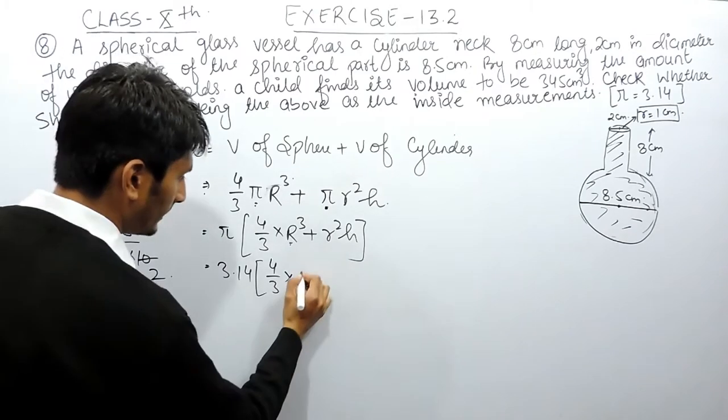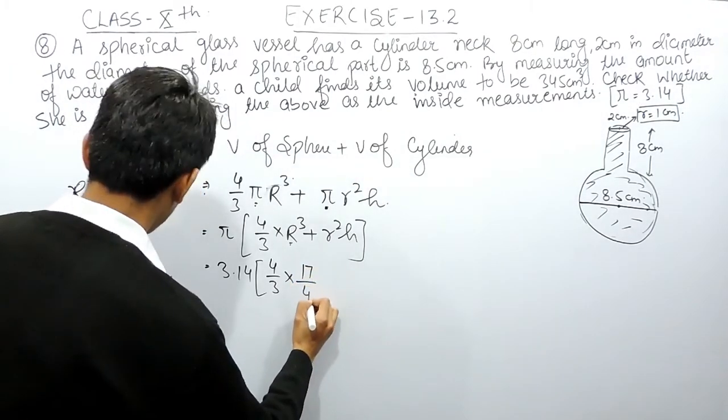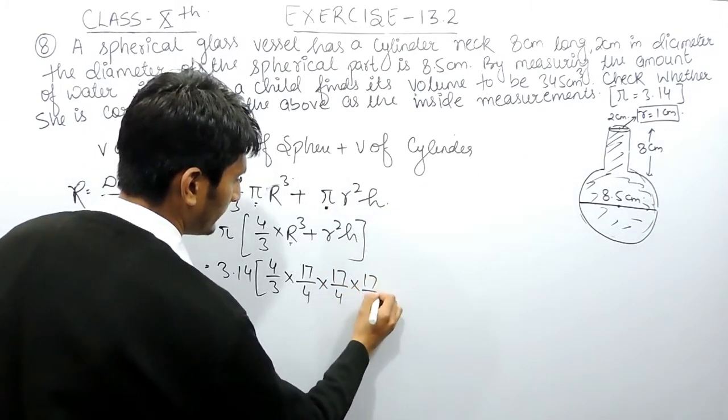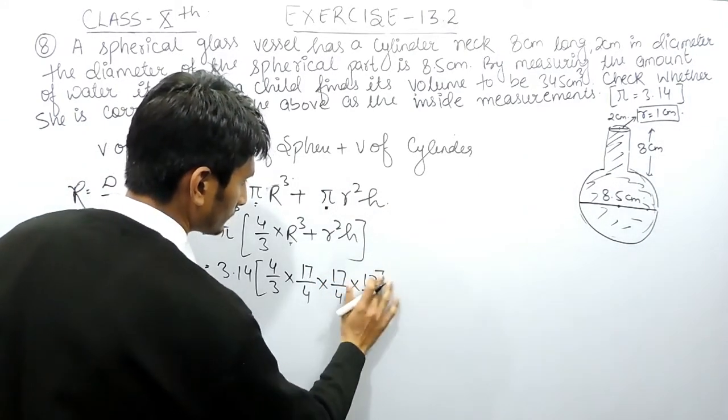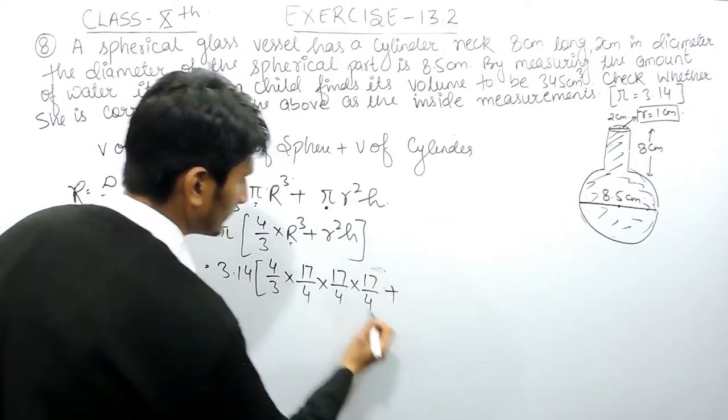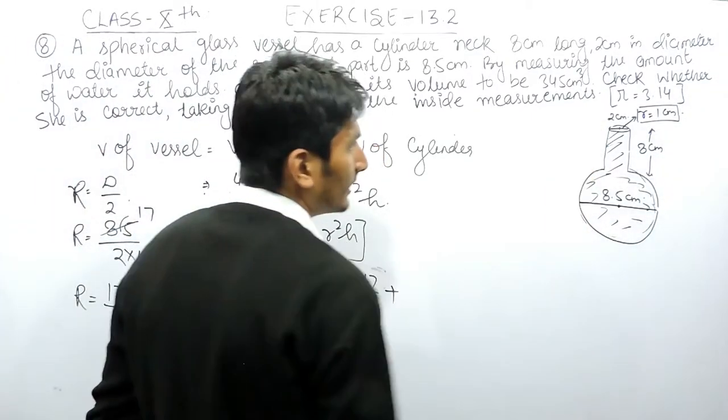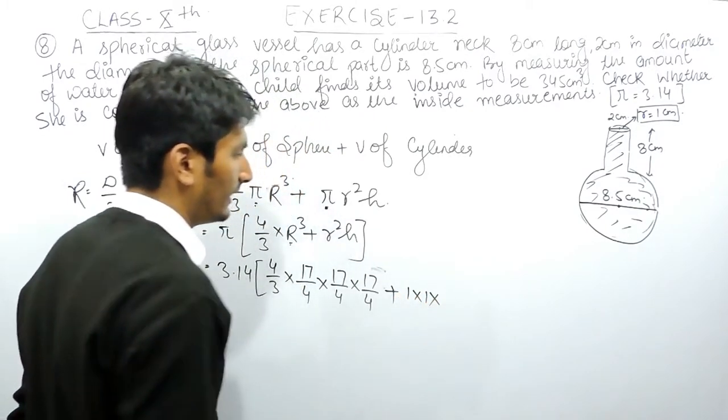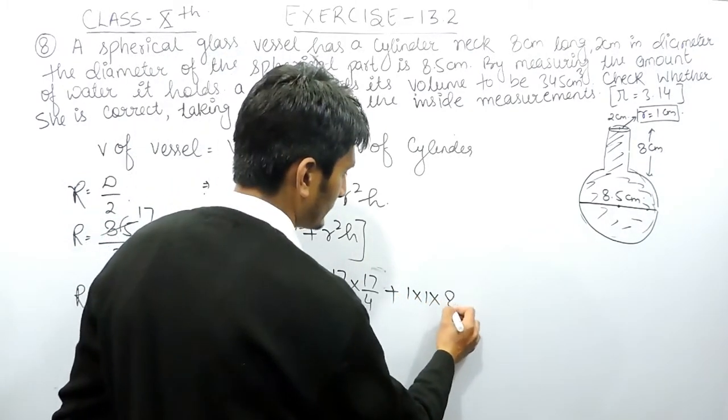So here it will be 17 upon 4 multiplied by 17 upon 4 multiplied by 17 upon 4, plus here the small r which is the radius of the cylinder is 1, so it will be 1 multiplied by 1 and the height is 8 cm.